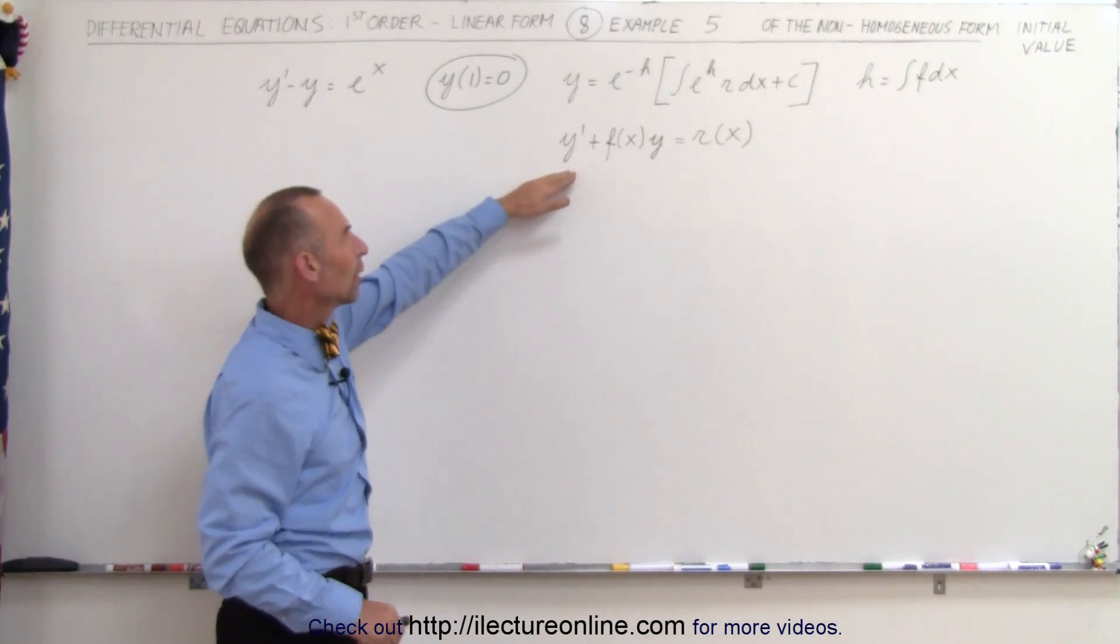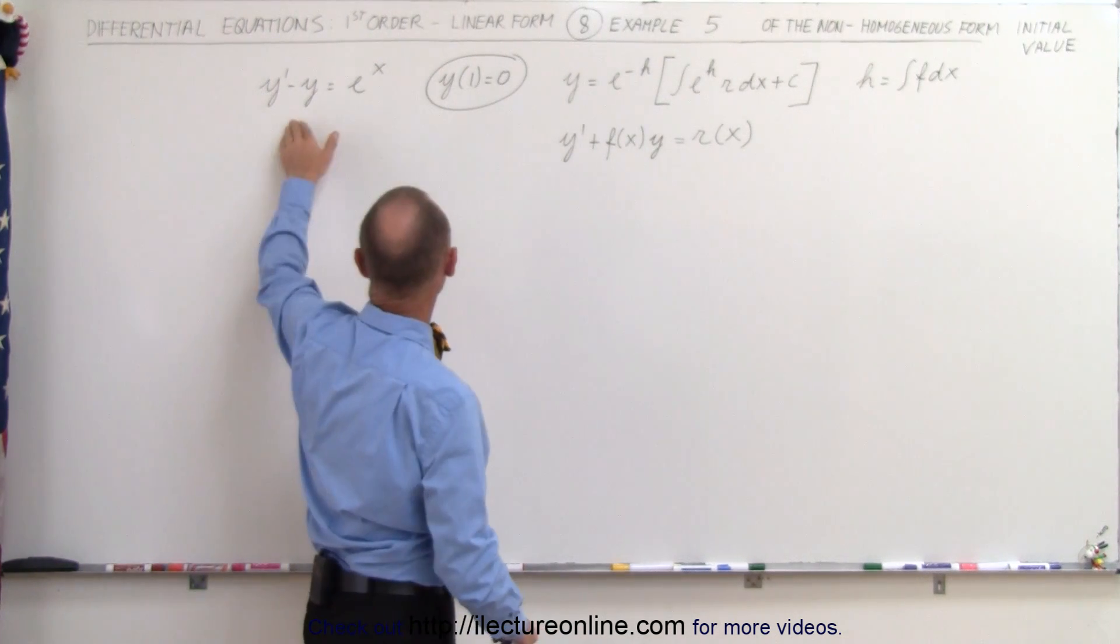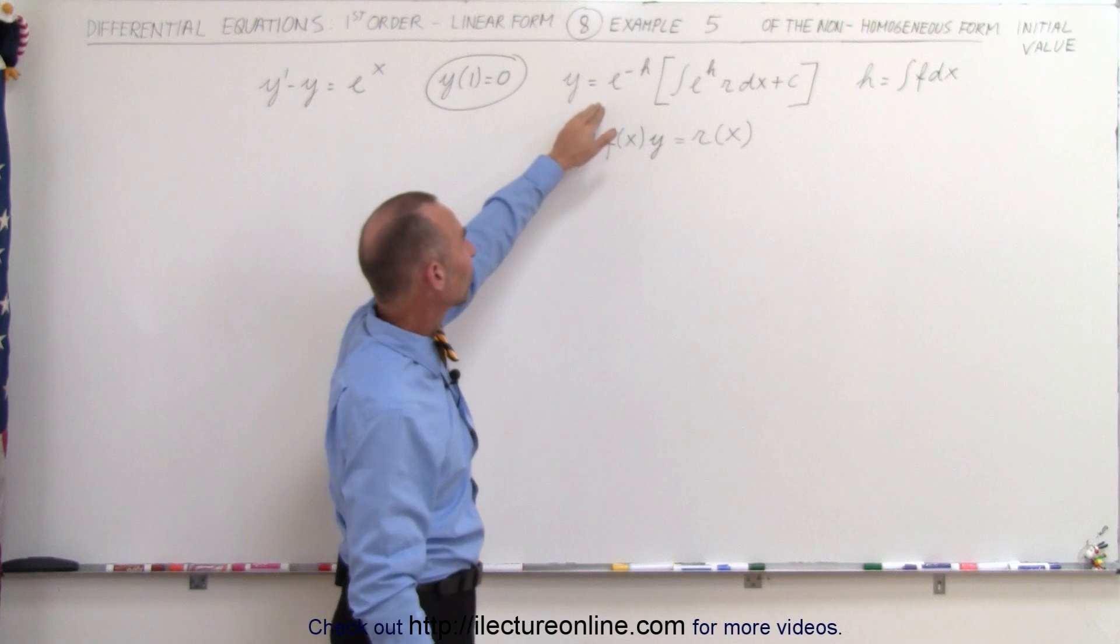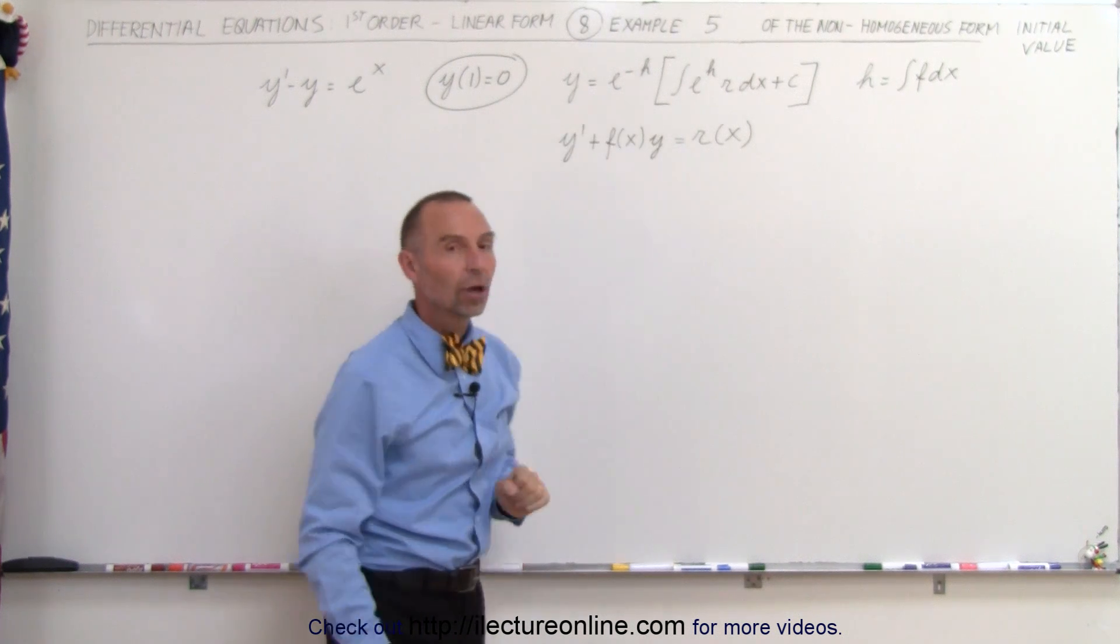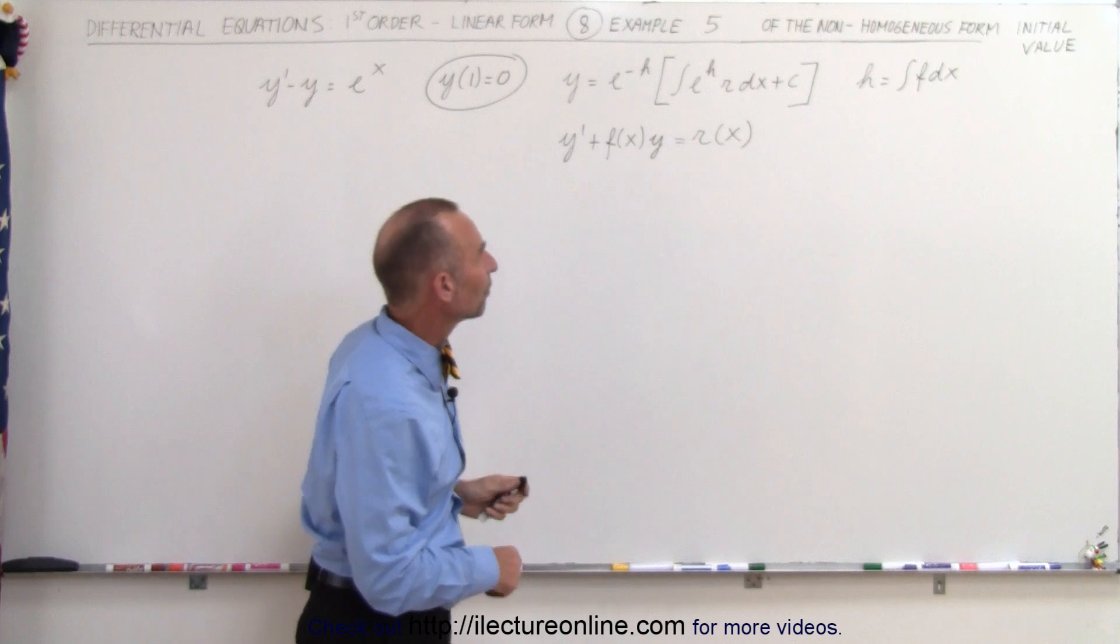The general form of the equation looks like this, so this looks like it's already in the general form, and this is the general solution of the first order non-homogeneous equation.